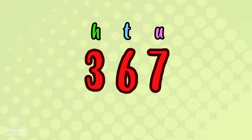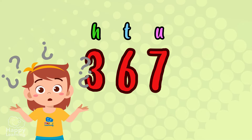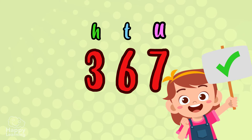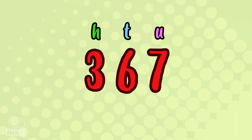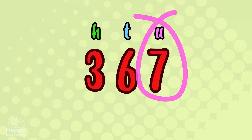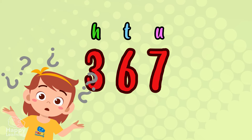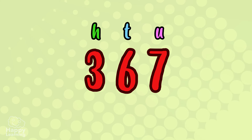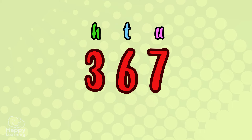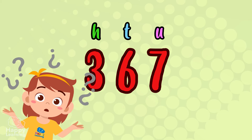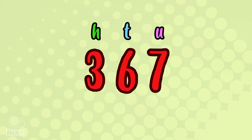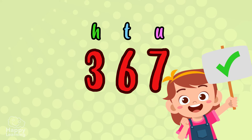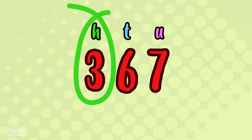Let's try with the number three hundred and sixty-seven. Now it's your turn. How many units do you think there are? Very good — there are seven units. The units are written in the first position, counting from the right. How many tens are there? Yes, very good — there are six tens. The tens are written in the second position, counting from the right. And thirdly, how many hundreds do you see? Exactly — three hundreds. The hundreds are written in the third position, counting from the right.